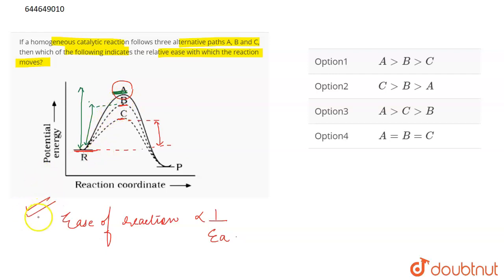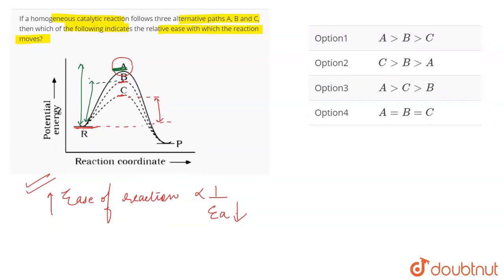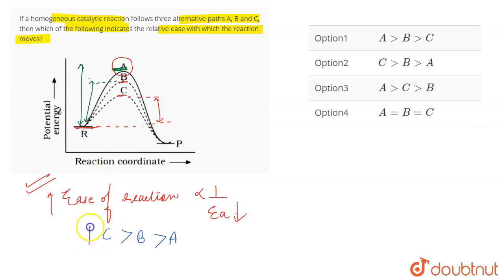Therefore, we have this relationship that ease of the reaction is inversely related to the activation energy. Lower the activation energy, easier it is for the reaction to take place and for the reactants to convert into products. The A reaction pathway has the highest activation energy and the least ease of reaction. The B pathway has an activation energy less than A, so the reaction will be easier compared to A. Whereas for reaction pathway C, the activation energy is very less, so the ease of reaction is maximum. Therefore, C is greater than B is greater than A is the correct order for the relative ease with which the reaction moves.